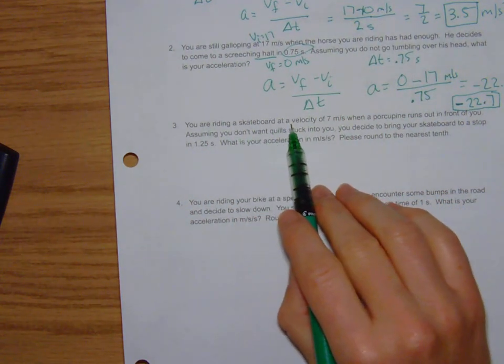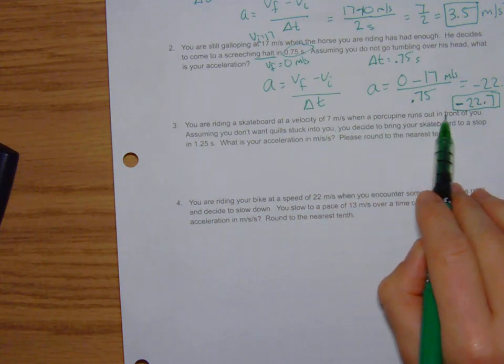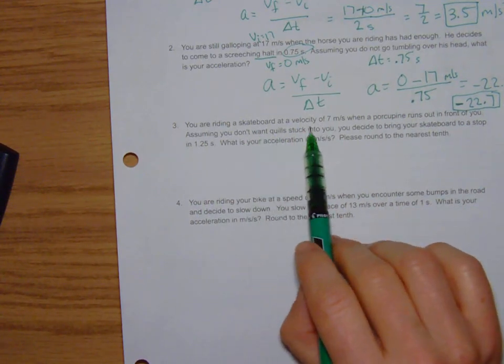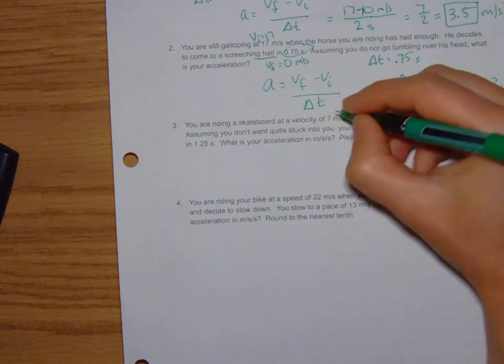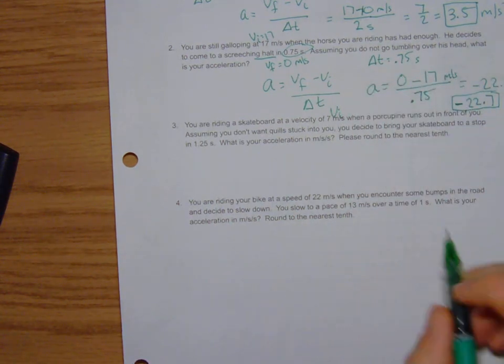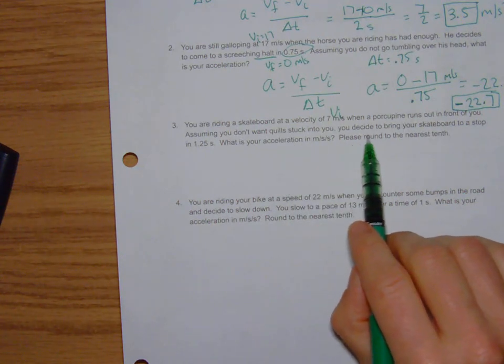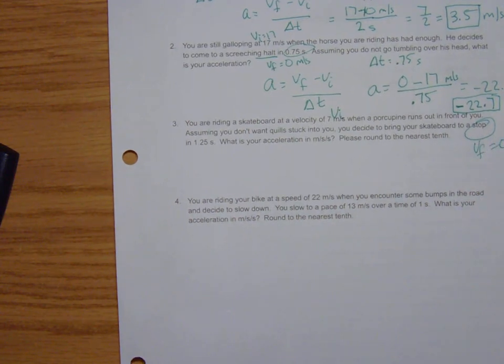They're riding at a velocity of 7 meters per second when a porcupine runs out in front of you. You're riding at 7 meters per second when a porcupine runs out in front of you. That has to be your initial velocity of 7. Assuming you don't want quills stuck in you, you decide to bring your skateboard to a stop. Stop means the final velocity is 0.